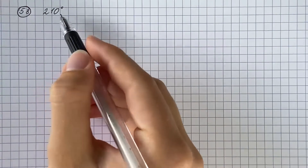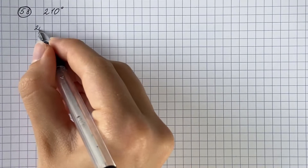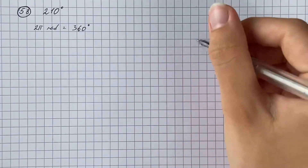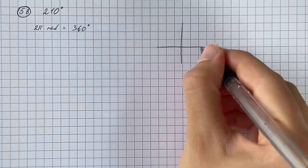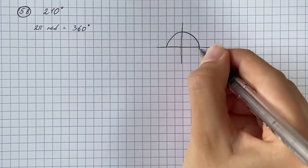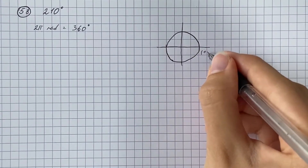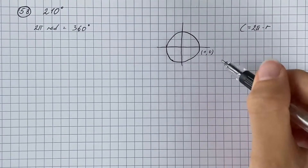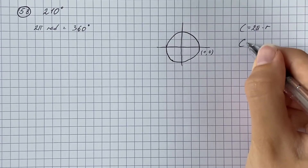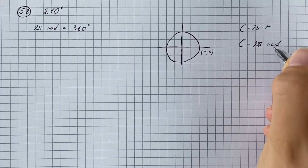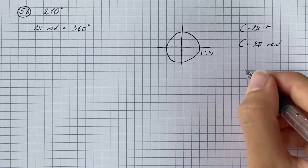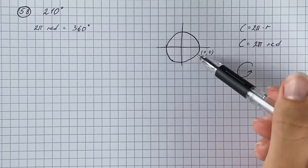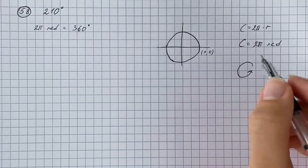We should convert from degrees to radians. We recall that 2π radians equals 360 degrees, and that comes from unit circles of radius 1. The circumference formula is 2π times radius, and in our case radius is 1, so it's going to be just 2π radians — the distance around the circle is 2π radians, which corresponds to turning 360 degrees.